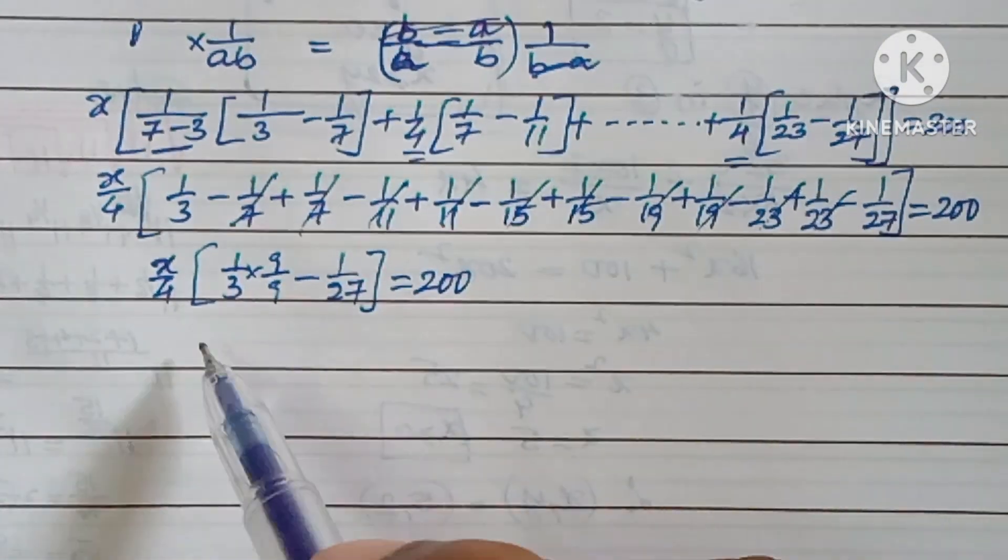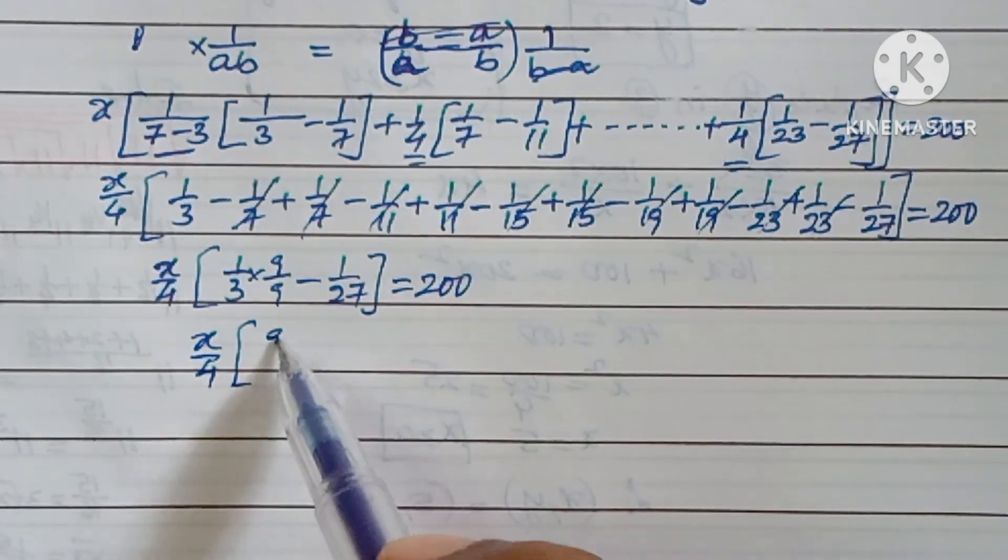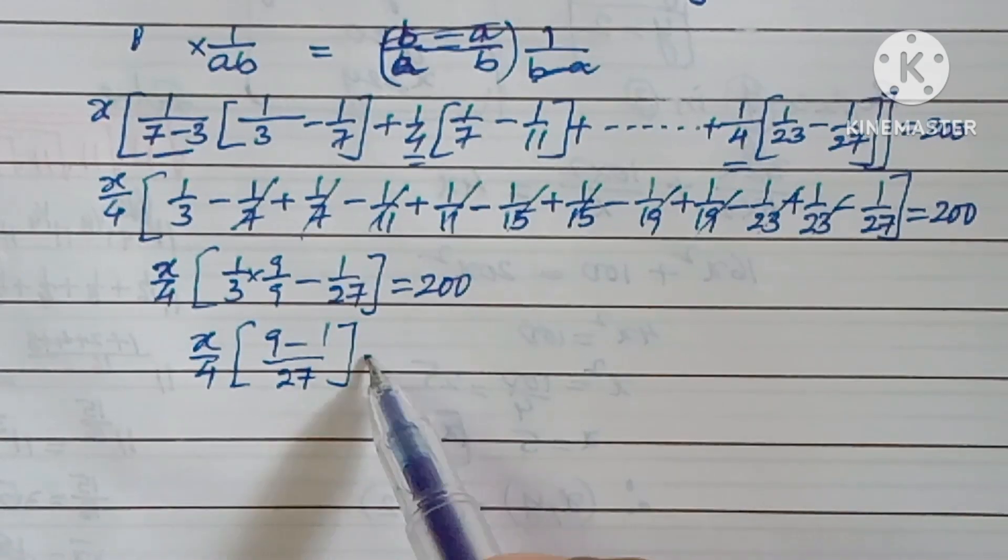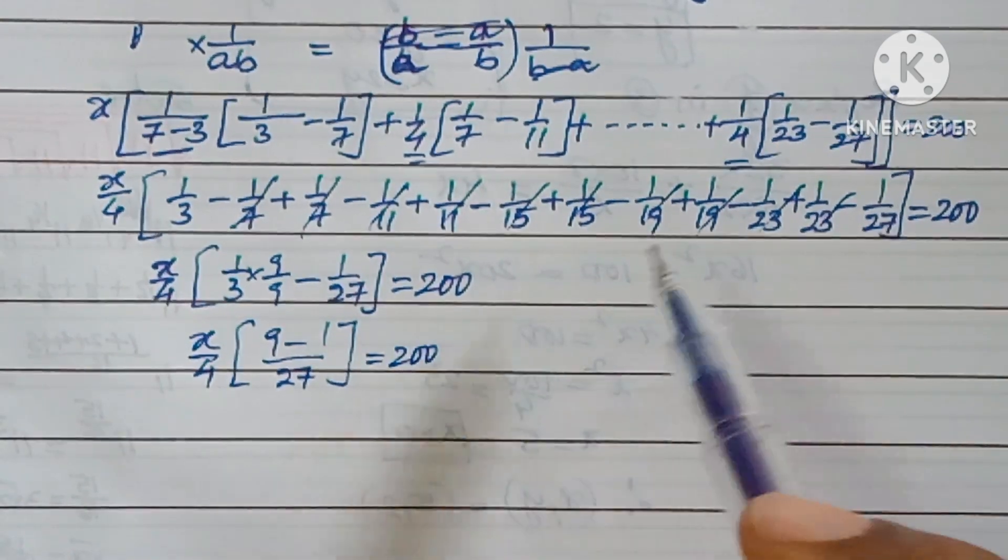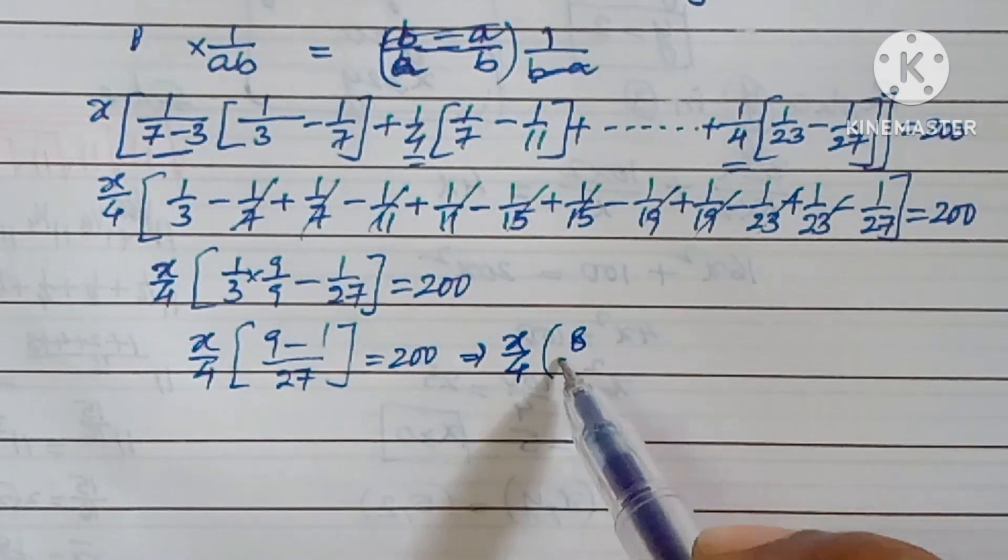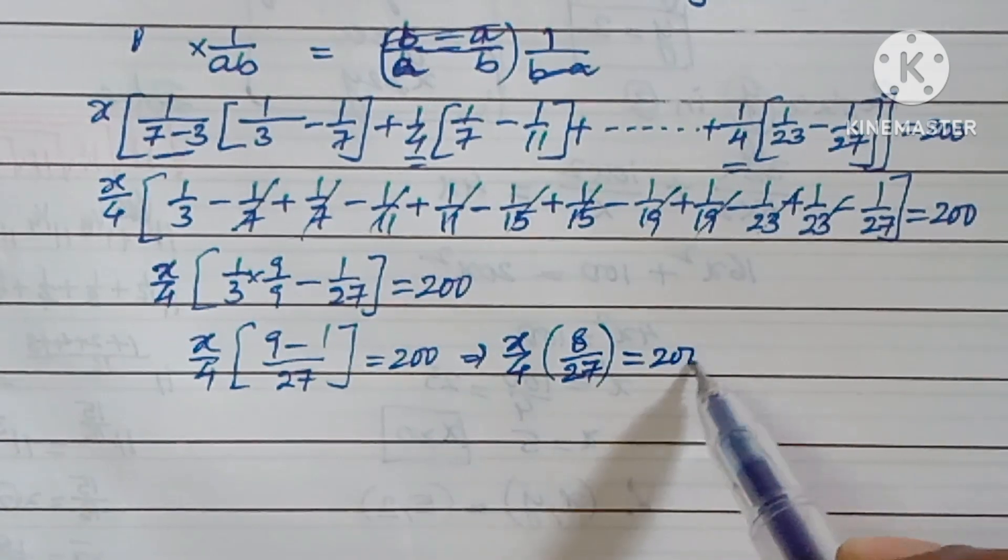That implies x/4 × 8/27 = 200. It will go two times.